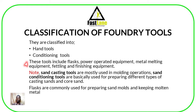When it comes to sand casting tools, these are mainly used for molding operations. Sand conditioning tools are basically used for preparing different types of casting sands — such as loam sand, core sand, green sand, and different sands we looked at last time. Conditioning tools are used for preparing those different casting sands. We are also going to look at flasks, which are used for creating the mold cavity whereby the pattern is withdrawn.